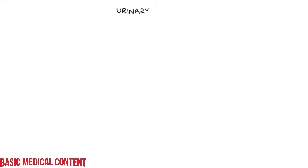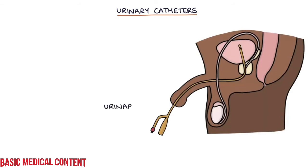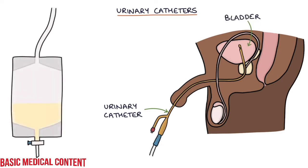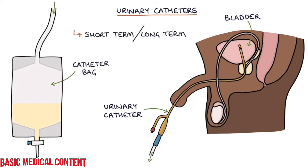In this video, I'm going to be going through urinary catheters. Urinary catheters are tubes that are inserted into the bladder to passively drain urine. Urine drains through the tube into a catheter bag, and urinary catheters may be used short-term or long-term depending on the indication.